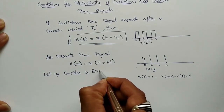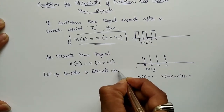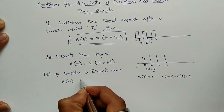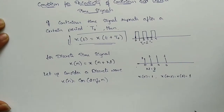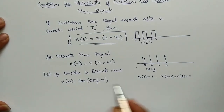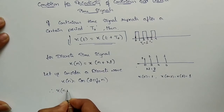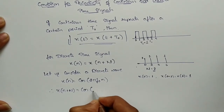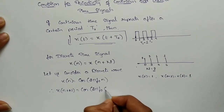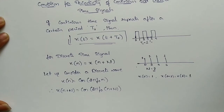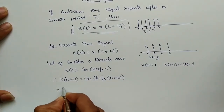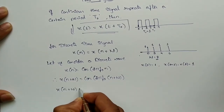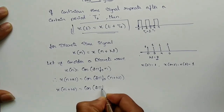Let us take the discrete time signal to the next level. Consider a discrete wave x[n] = cos(2πf₀n). Then x[n + N] becomes cos(2πf₀(n + N)), replacing n by n + N.